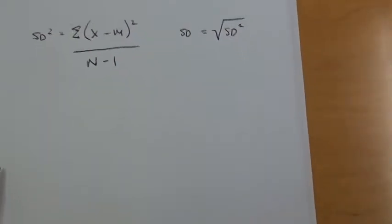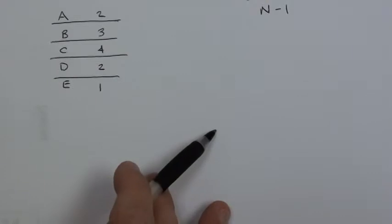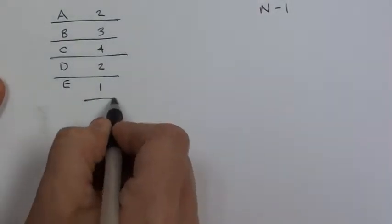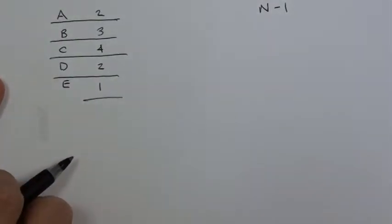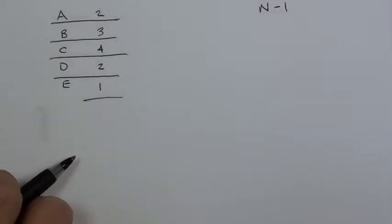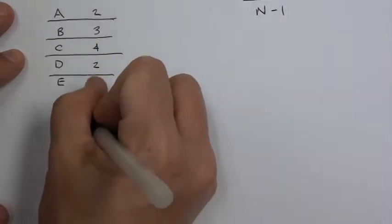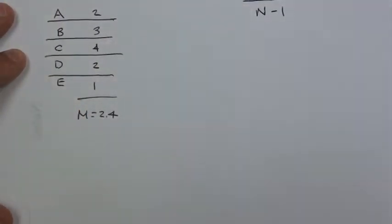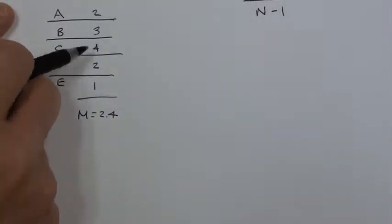First, let's calculate the mean. So we're looking at 2, 5, 9, 11, 12, divided by 5, because we have 5 scores, which gives us 2.4. So the mean score is 2.4. We added all of these up and divided by 5.